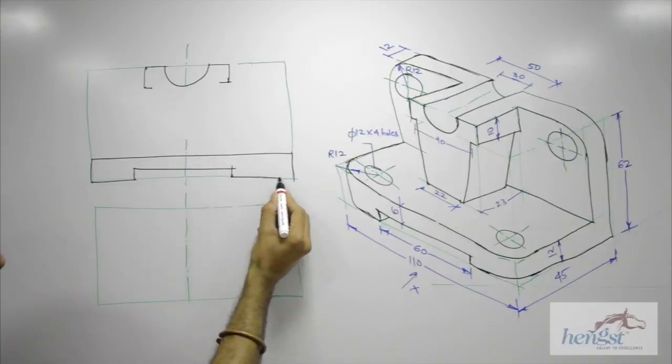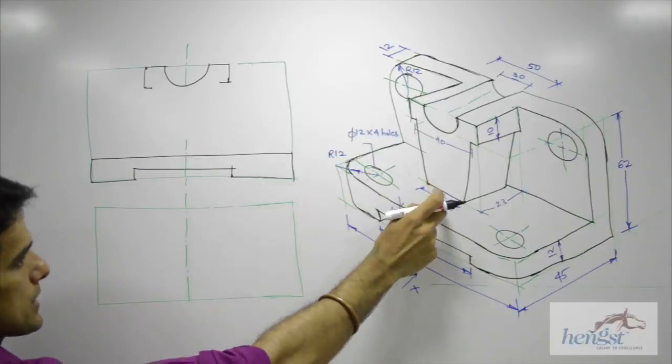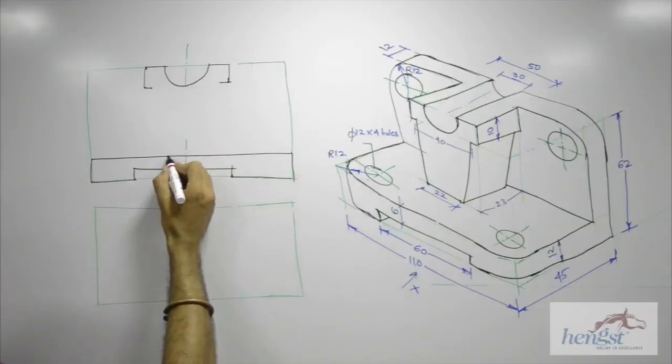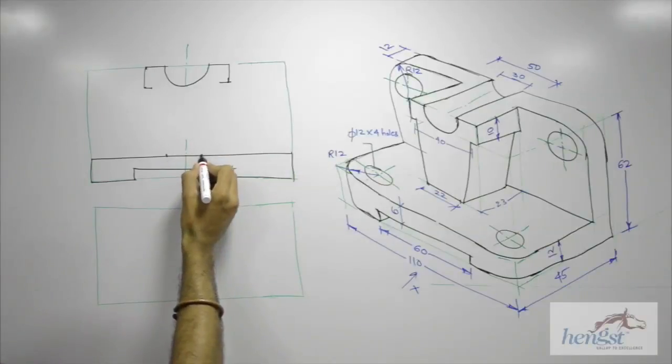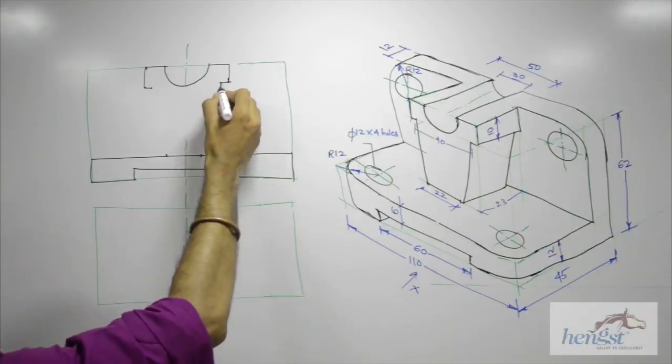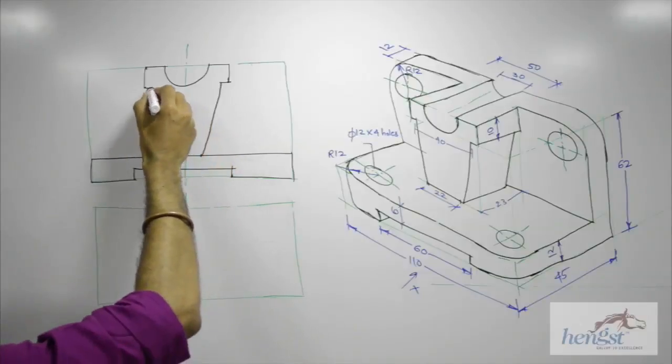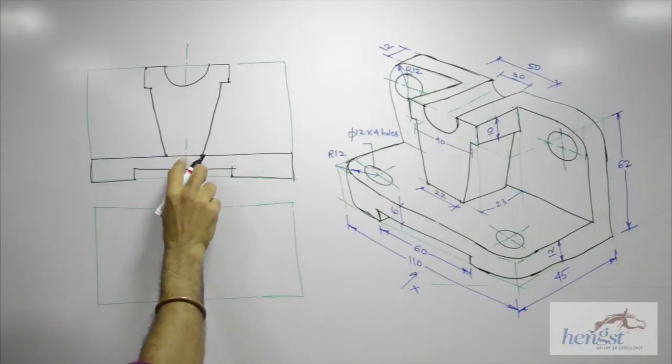So we are done with this lower part. Now how much is this? 22. So from center we can take 11 on both sides. And we can join this.